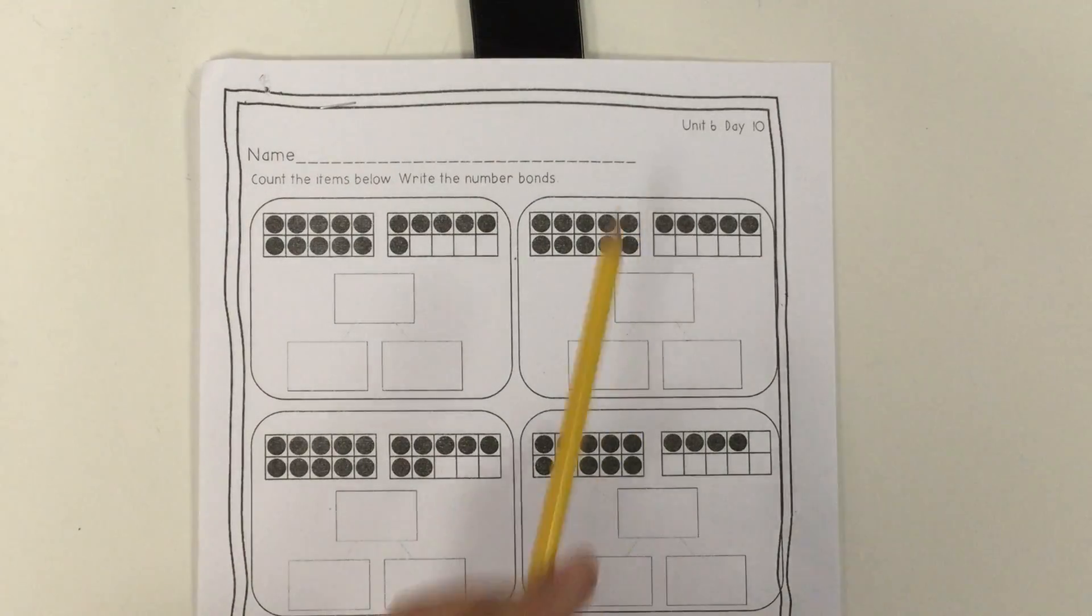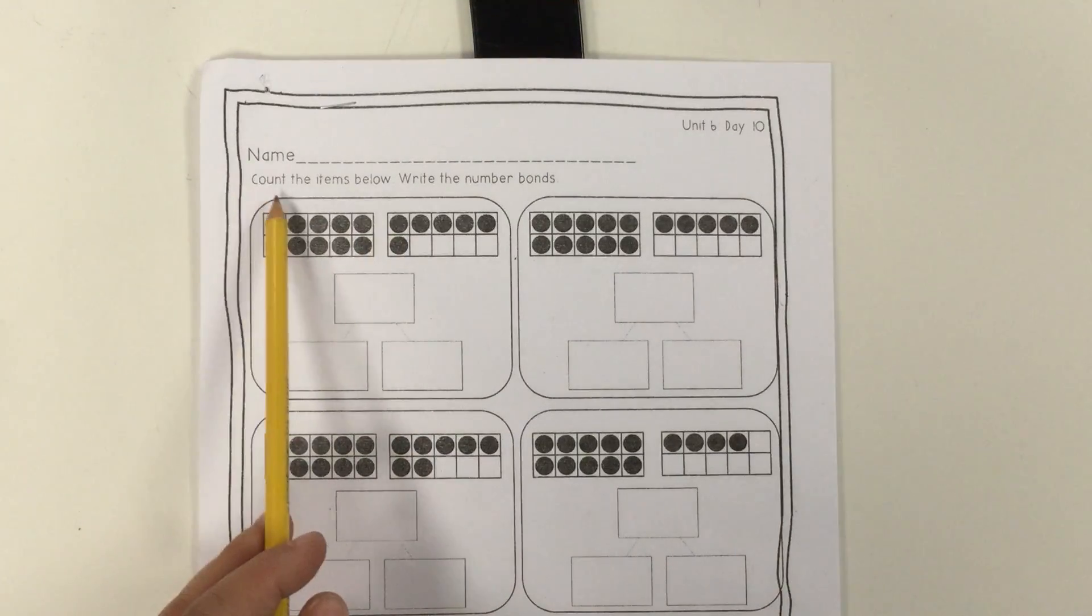These are your instructions for unit 6, day 10. The directions say count the items below, write the number bonds.